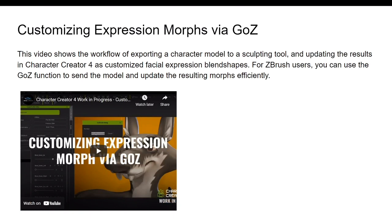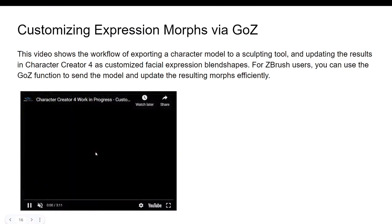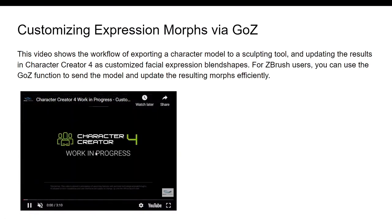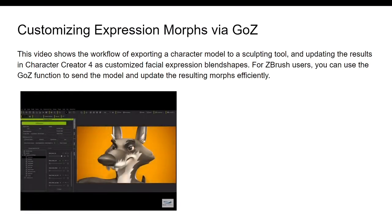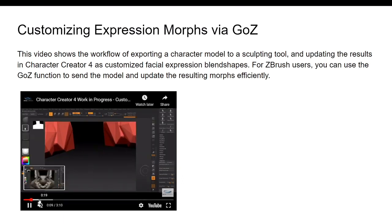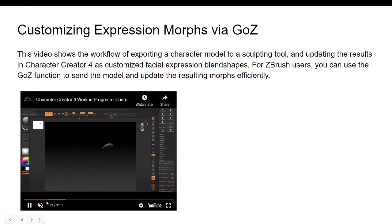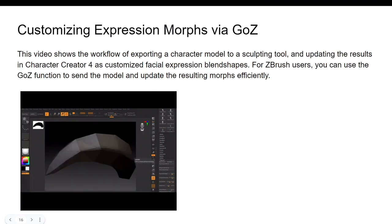For custom expression blend shapes: customized expression morphs via GoZ — which was available in Character Creator 3 and is now advanced in Character Creator 4. The workflow involves exporting the character model to a sculpting tool and updating the result in Character Creator 4 as a customized facial expression blend shape. For ZBrush users, you can use the GoZ function to send the model and update the result more efficiently — this will be simplified and more easily done in CC4.